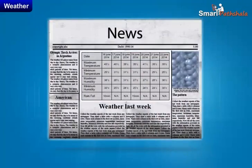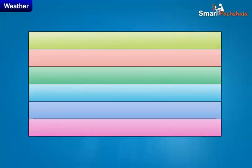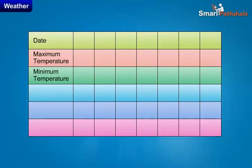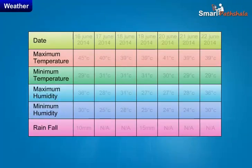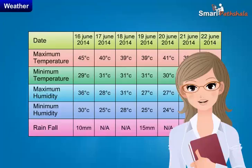Let's perform an activity: collect the weather reports of the last week from any newspaper. Then draw a table with six columns and eight rows. Name each column in the first row as: date, maximum temperature, minimum temperature, maximum humidity, minimum humidity, and rainfall respectively. Now fill all the rows with the information provided in the weather reports.